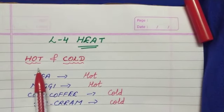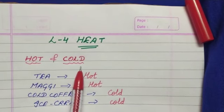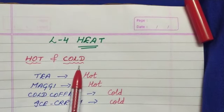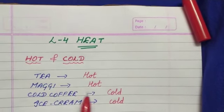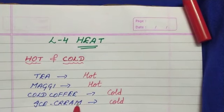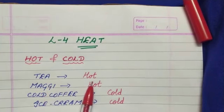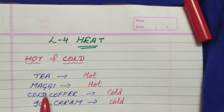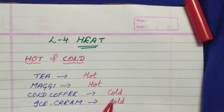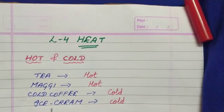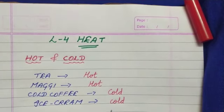First, we will see the difference between hot and cold. Children, we come across a number of objects in our day-to-day life. Some are hot and some are cold. You can see some examples here. Tea, we all like to drink it hot. Maggi, we all like to eat it hot. Cold coffee, juices, we like cold. Ice cream, we like to have it very very cold.